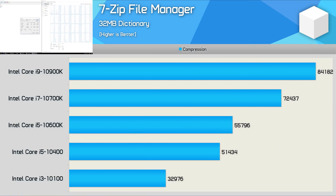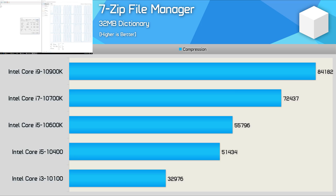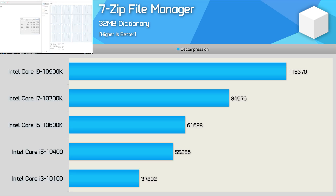The most significant performance gains in the 7-zip file manager compression test come when moving from the 4-core Core i3 10100 to the 6-core 10400, with the 10400 being 55% faster, while the 10600K was a further 8% faster. Then we see a 30% boost from the 10600K to the 10700K, though you could argue the 16% increase from the 10700K to the 10900K is less significant, making it difficult to justify the 30% MSRP increase. In decompression, performance scales much better thanks to hyper-threading — the 10900K is now 36% faster than the 10700K, making the 30% price premium easier to justify.